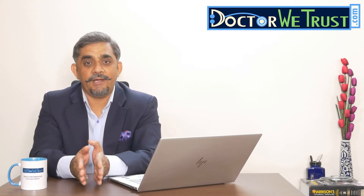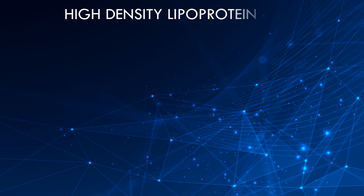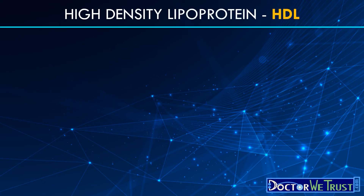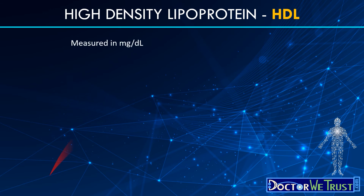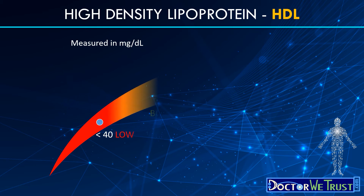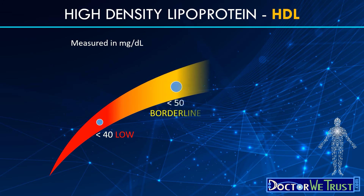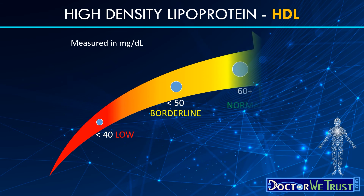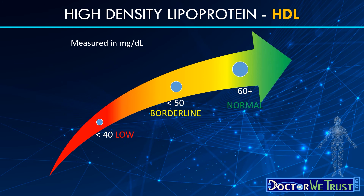What are the recommended levels for HDL? For adult males, values of less than 40 mg per deciliter are considered low and increase the risk for cardiovascular illness. Between 40 and 50 mg per deciliter is considered an average level. Levels above 50 mg per deciliter are considered high, have a protective effect on heart and brain health, and are generally considered desirable.